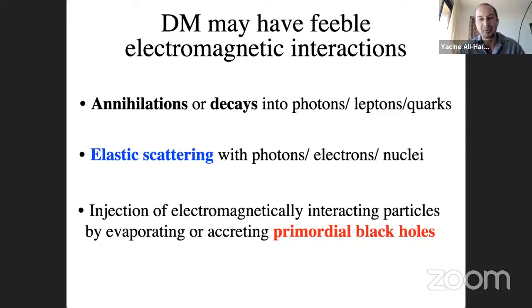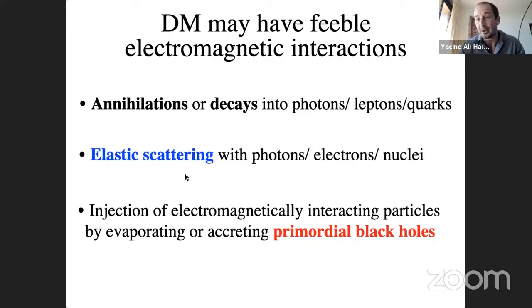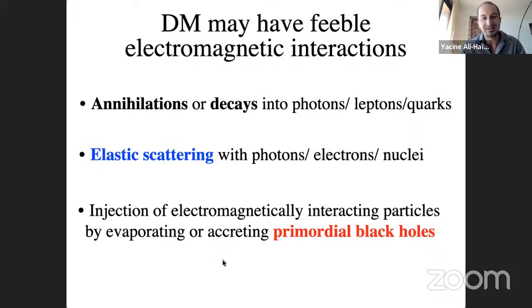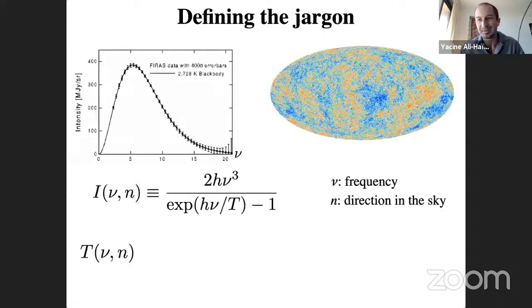For example, dark matter could annihilate with itself or its anti-particle into photons, leptons, or quarks, or it could decay. It could also scatter elastically with standard model particles — photons, electrons, and nuclei — which is what direct detection experiments look for. A completely different dark matter candidate is primordial black holes, which could inject electromagnetically interacting particles into the plasma if they evaporate or accrete.